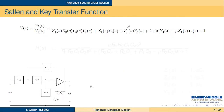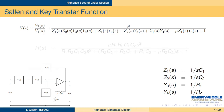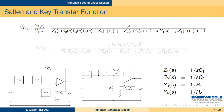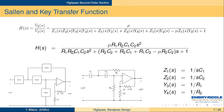Here's the Sallen-Key transfer function again. In this case, we want to make the series impedances in this branch capacitors, so the impedances will be 1/SC₁ and 1/SC₂. Then we make the Z₃ and Z₄ branches resistors — 1/R₁ for Y₃ and 1/R₂ for Y₄. That gives us the high-pass Sallen-Key circuit. When you plug these impedances and admittances into the general form and do a little algebra, you end up with R₁R₂C₁C₂S² in the numerator, with the middle term R₂C₂ + R₂C₁ + R₁C₂ − μR₂C₂ times S plus 1 in the denominator.